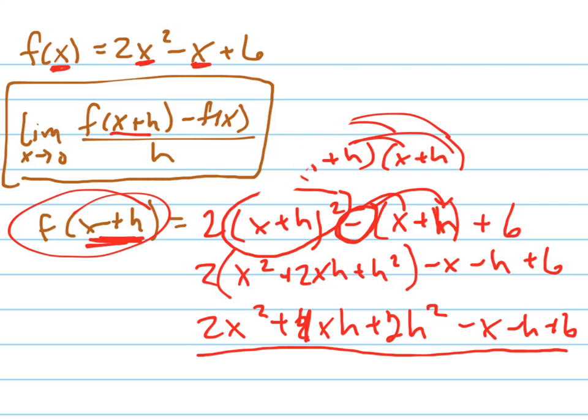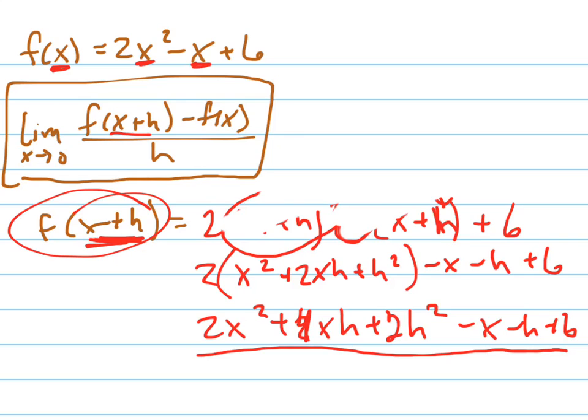So let me erase all this stuff. And let me plug that in right up here. So this equals the limit as h goes to 0 of, I'm going to plug that mess in, 2x squared plus 4xh plus 2h squared minus x minus h plus 6.